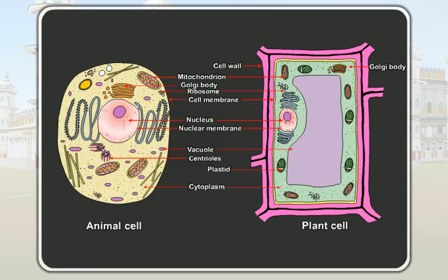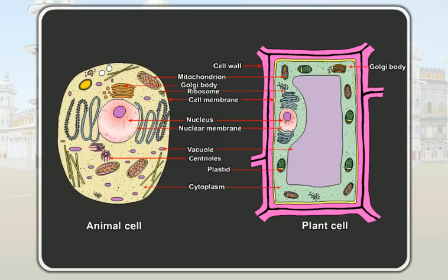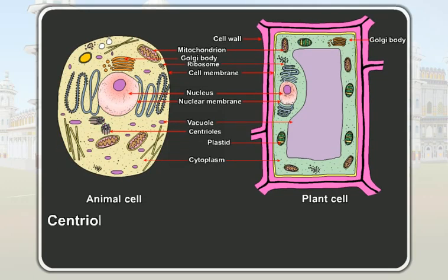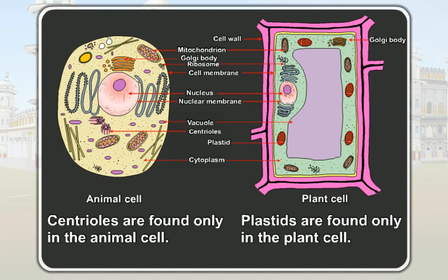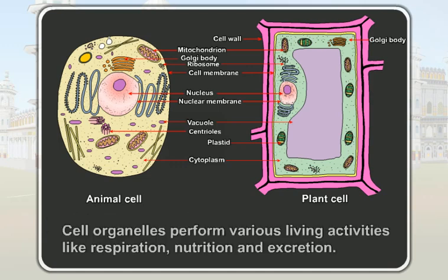Cell organelles like mitochondria, ribosomes and Golgi bodies are found both in the plant cell and the animal cell. But centrioles are found only in the animal cell, and plastids are found only in the plant cell. All these cell organelles perform various living activities like respiration, nutrition and excretion.